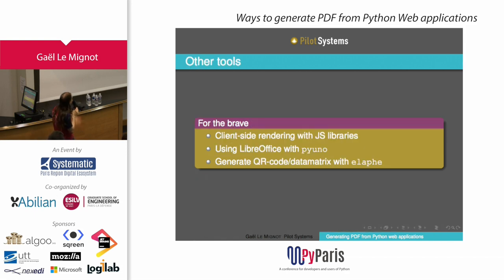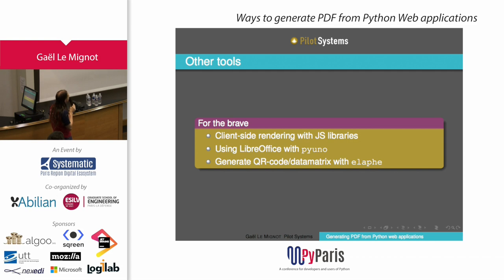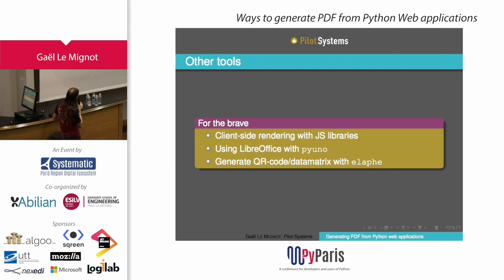For the adventurous, there are also a few other options. You can do client-side rendering with JavaScript libraries, though that's not the topic today. You can also remote-control a running LibreOffice instance from Python, but you need to deploy LibreOffice in server mode which is quite heavy. And there are libraries like pyRFC if you want to generate QR codes, data matrices, and similar things.